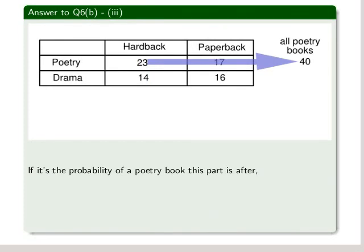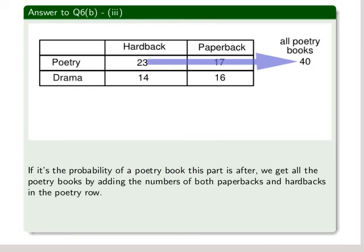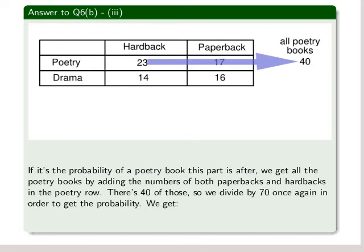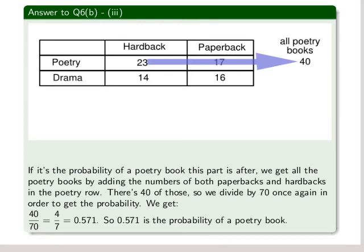Part three. If it's the probability of a poetry book this part is after, we get all the poetry books by adding the numbers of both paperbacks and hardbacks in the poetry row. And as you can see, there's 40 of those, so we divide by 70 once again in order to get the probability. We get 40 over 70, which equals 4 over 7. We get 0.571. So 0.571 is the probability of a poetry book.